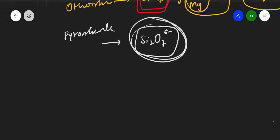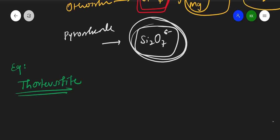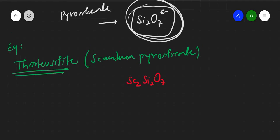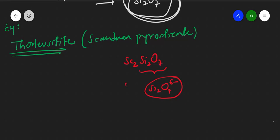Examples of pyrosilicates: one is thortveitite — spelled T-H-O-R-T-V-E-I-T-I-T-E — which contains scandium. This is scandium pyrosilicate with formula Sc₂Si₂O₇. Since the anion part is Si₂O₇⁶⁻ and scandium is 3+, two scandium ions form a neutral compound — scandium pyrosilicate, thortveitite.